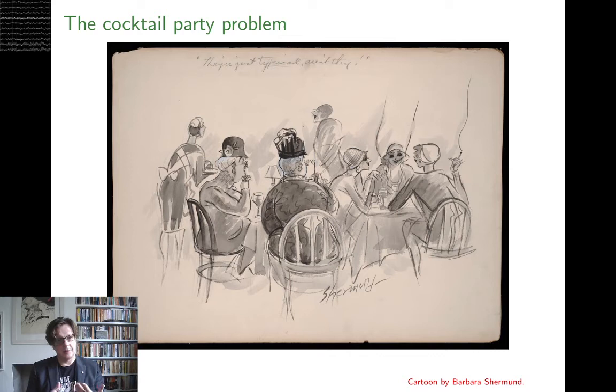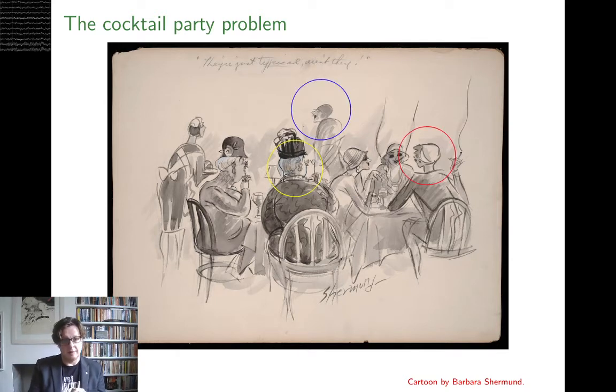So the cocktail party problem is classically described as this. You are at a cocktail party, which is some sort of, not really sure, do you go to a cocktail party and then somewhere else afterwards? Or is that this? I don't know. But you're at a crowded function. Lots of people are talking. You're talking to one particular person and you're trying to work out what they're saying. So in this version here, I'm not even sure this is a cocktail party. It might be a tea room or something, but the lady circled in yellow clearly wants to hear what the lady in red is saying, the lady circled in red is saying.